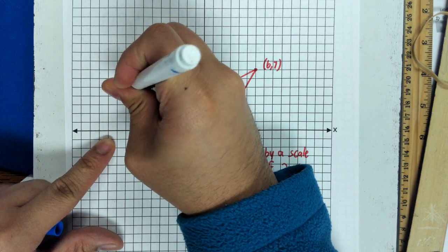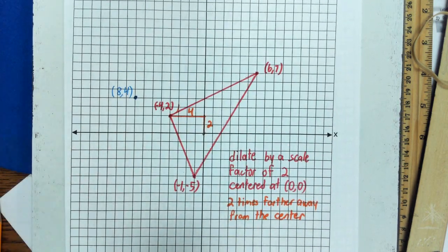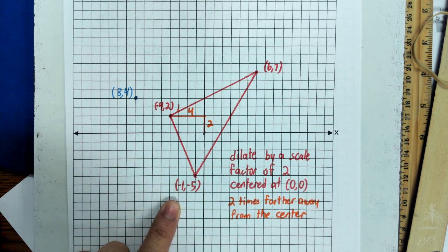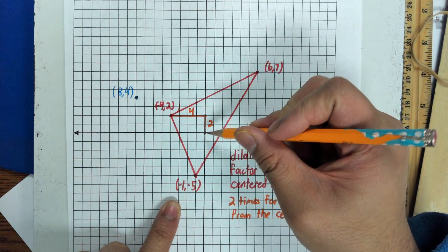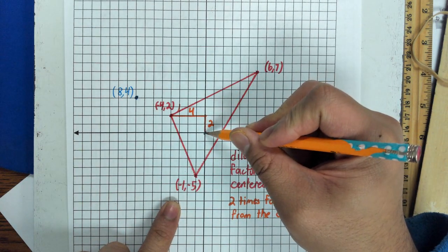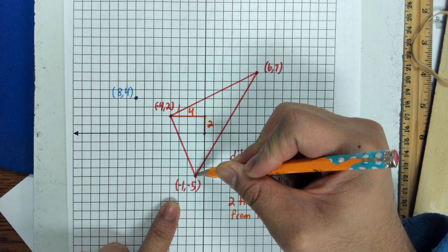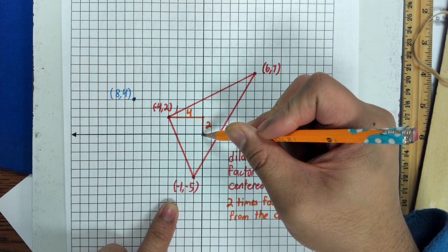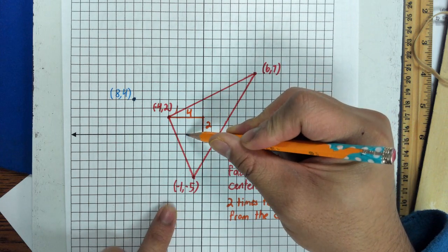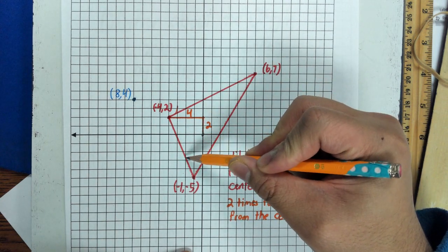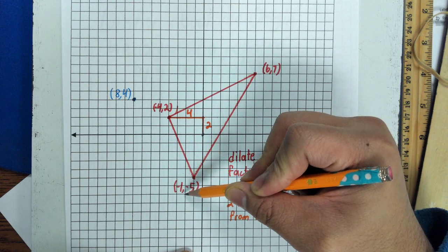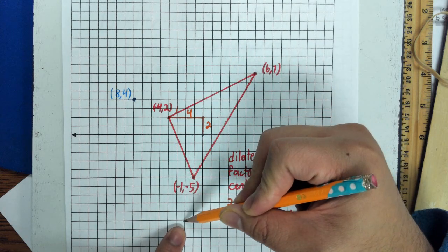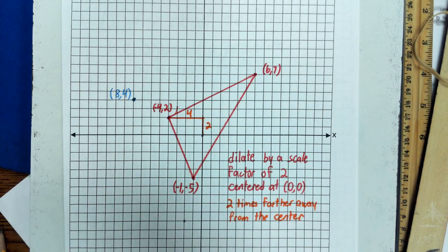That new point is now at eight, four. Doing the same for the next point: from the origin I go over one and down five. Two times farther away means I go over two and down ten. There's my new point.